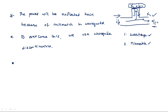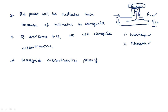Waveguide discontinuities create some lumped parameters — a combination of resistance and capacitance, or resistance and inductance, or capacitance and inductive components. So waveguide discontinuities provide lumped parameters.